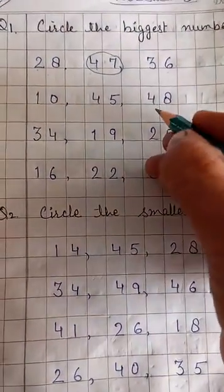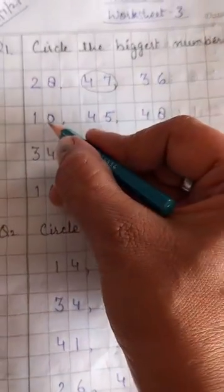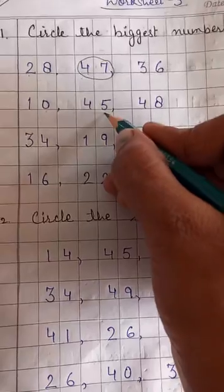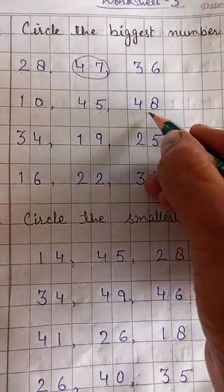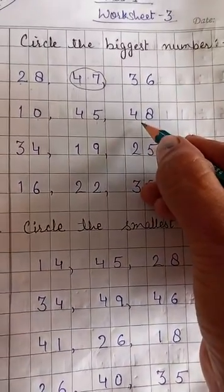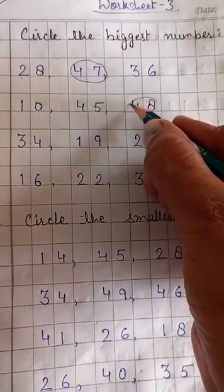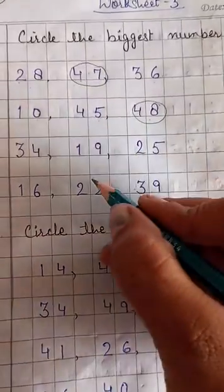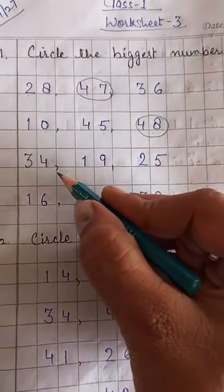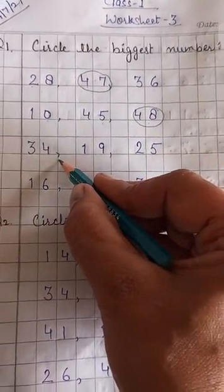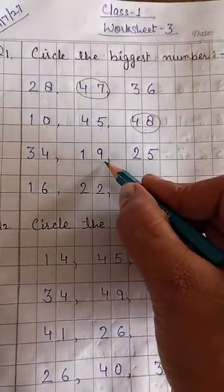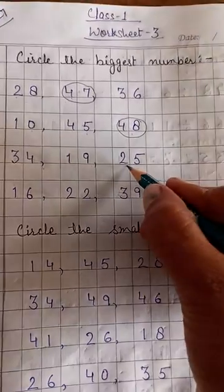Okay, next one is 10, 45 and 48. Which one is the biggest number? Yes, very good. 48 and the next one is 34, 19, 25.